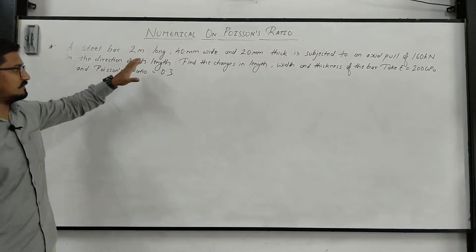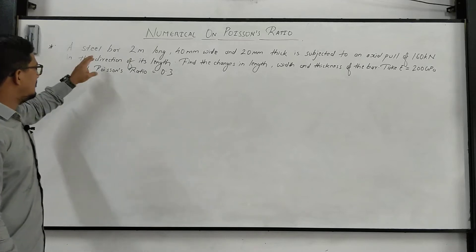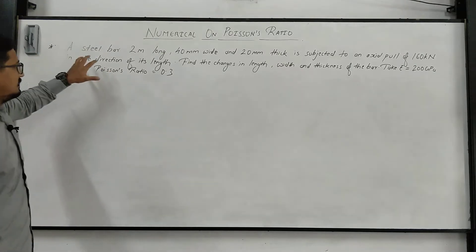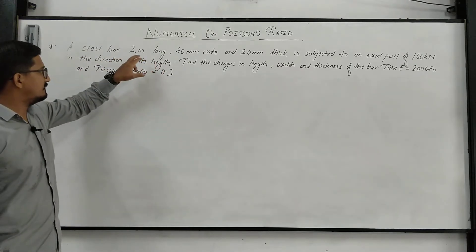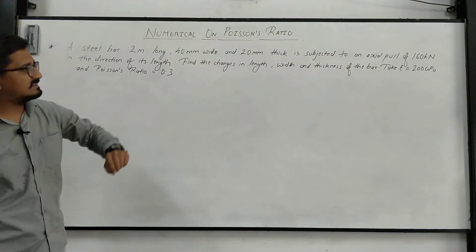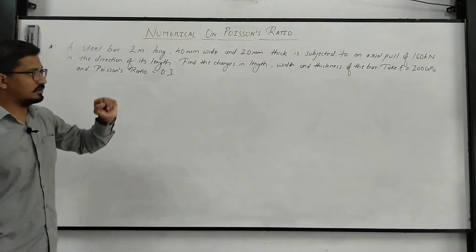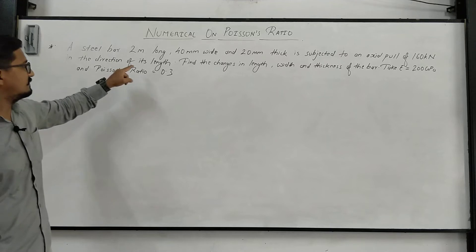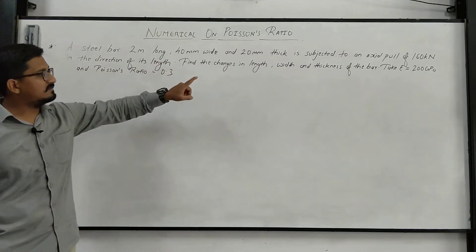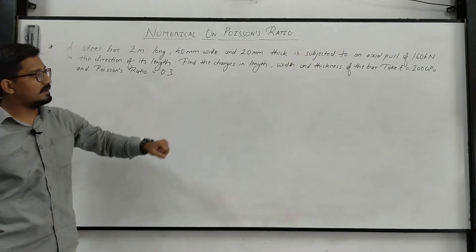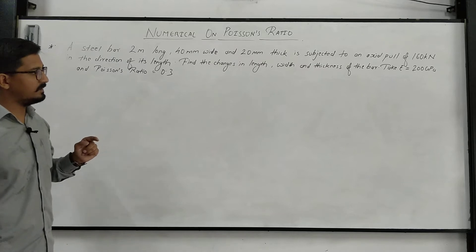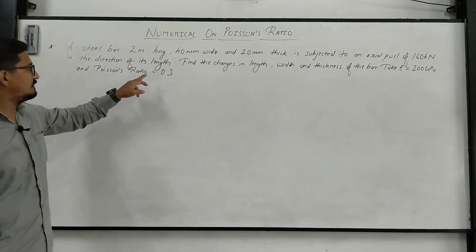So this is how the question goes: a steel bar 2 meter long, 40 mm wide and 20 mm thick is subjected to an axial pull of 160 kN in the direction of its length. Find the changes in length, width and thickness of the bar. Take Young's modulus of elasticity E equal to 200 GPa and Poisson's ratio equal to 0.3.